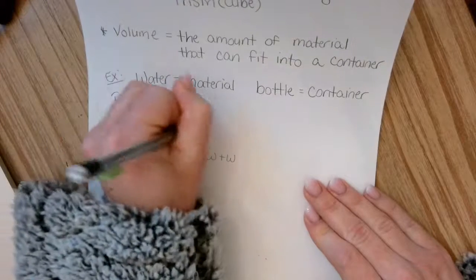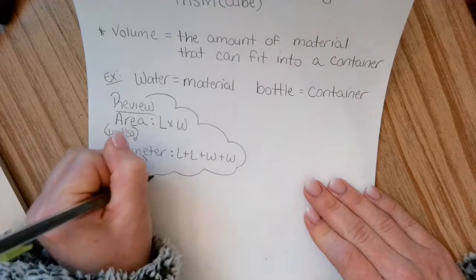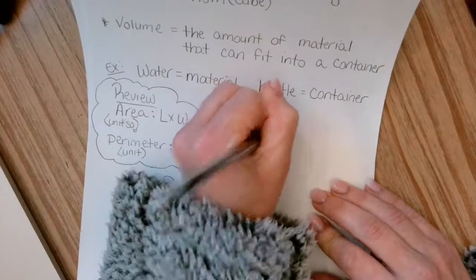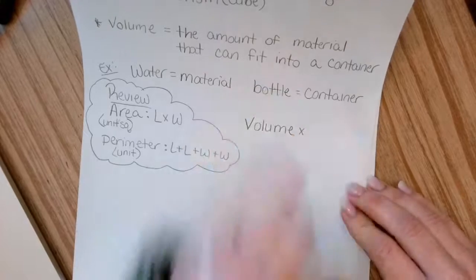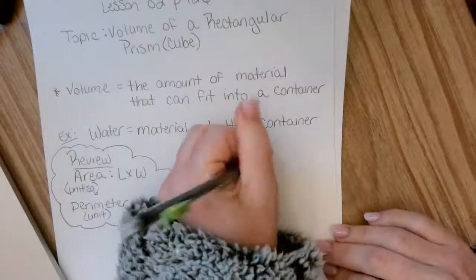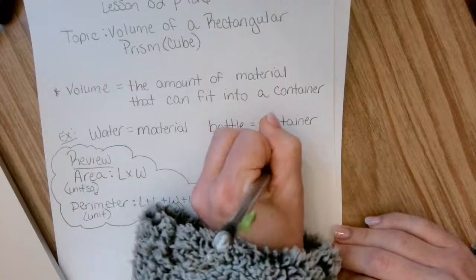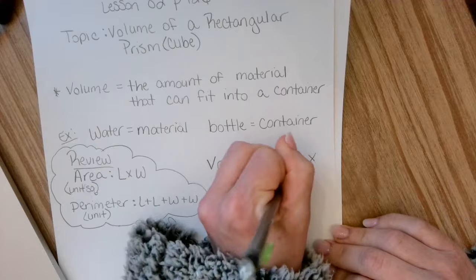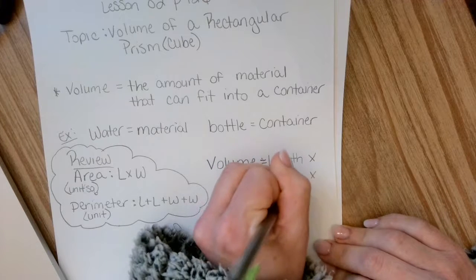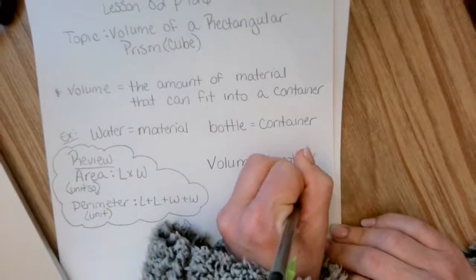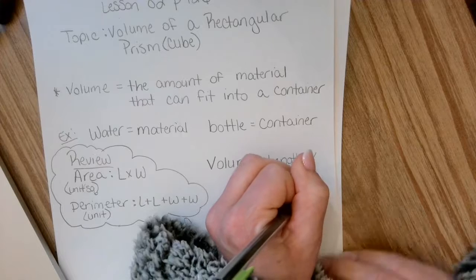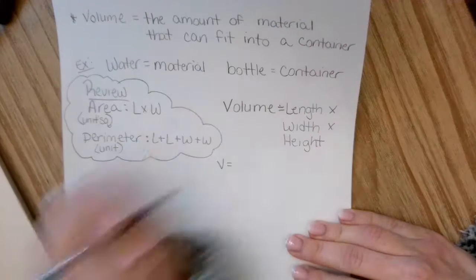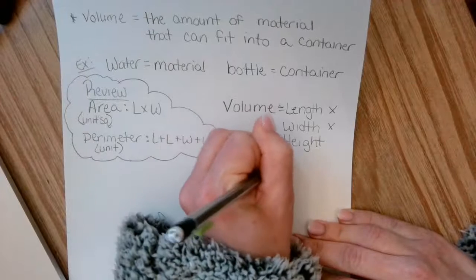So now how do we get volume? Rather than only having two measurements, volume actually has three. So volume is going to be length times width times height. So in other words, V equals L times W times H.